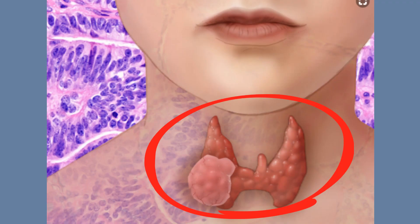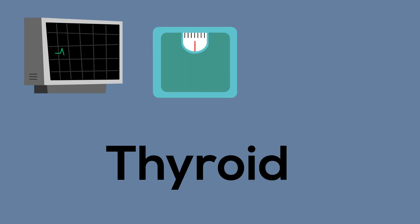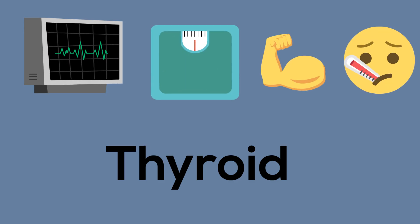Your thyroid is a butterfly-shaped organ located at the base of your neck and controls your metabolism along with other functions which include your heart rate, your body weight, your muscle strength, and your body temperature.